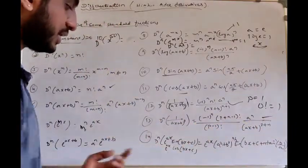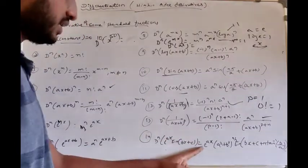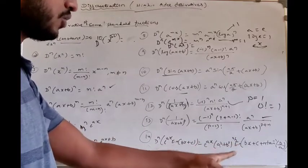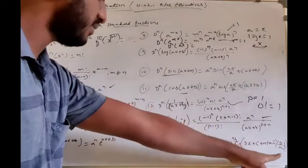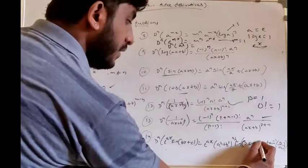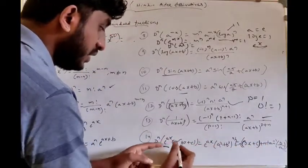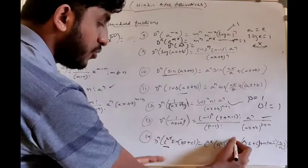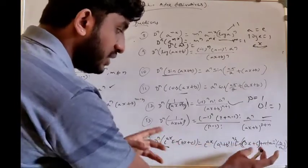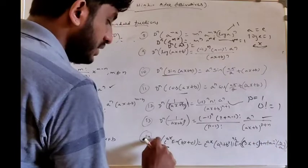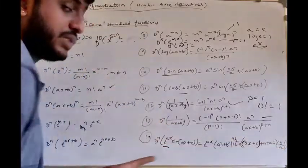The nth derivative of e^(ax) · sin(bx+c) is e^(ax) · (a²+b²)^(n/2) · sin(bx + c + n·tan⁻¹(b/a)). Here the amplitude factor is (a²+b²)^(n/2) and the phase shift added is n·tan⁻¹(b/a).